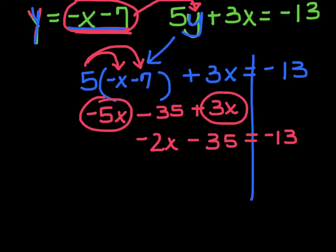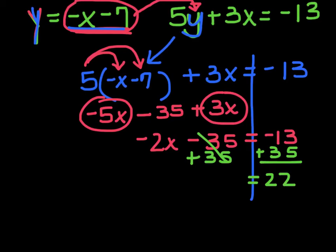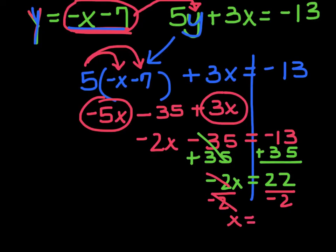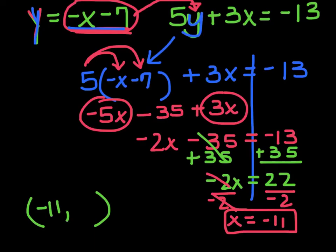I'm solving for x, so I add 35 to both sides. That gives me 22 equals negative 2x. Then I divide by negative 2: negative 2 divided by negative 2 is 1x, and 22 divided by negative 2 is negative 11. So I've solved my first part — the x value is negative 11.